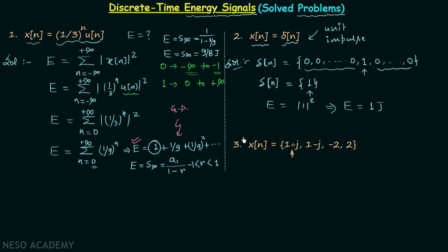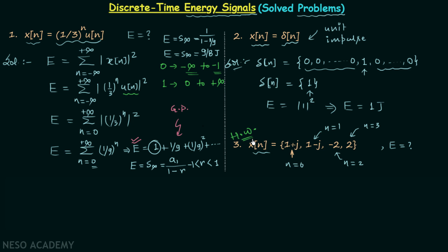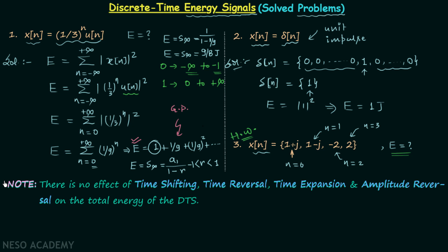Now we move to the third problem. The discrete time signal Xn equals (1+j) when n=0, equals (1-j) when n=1, equals -2 when n=2, and equals 2 when n=3. You need to calculate the total energy of this signal. Since we covered how to calculate total energy when samples are given like this in the previous lecture, this problem is homework. Calculate the total energy and post your answer in the comment section.